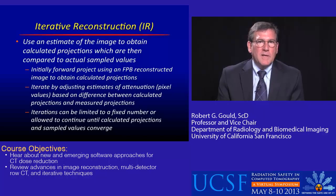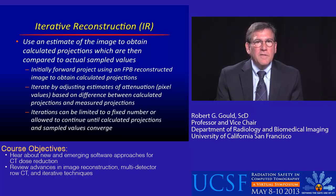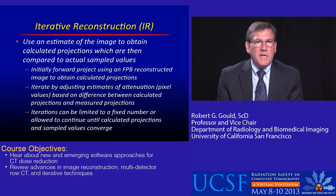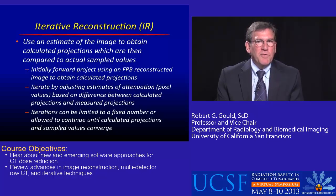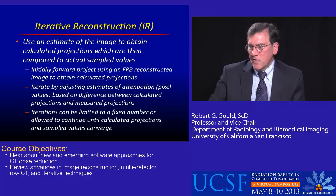You compare the calculated projections to the samples you collected. You iterate — adjusting the sample values based on the difference between the calculated projections and the measured projections. The iterations can be limited to a fixed number or allowed to continue until the calculated projections and sampled values converge.